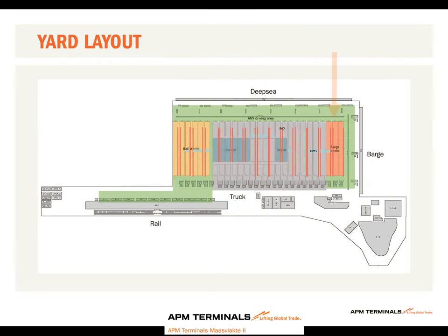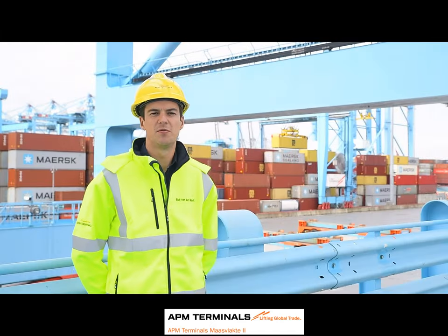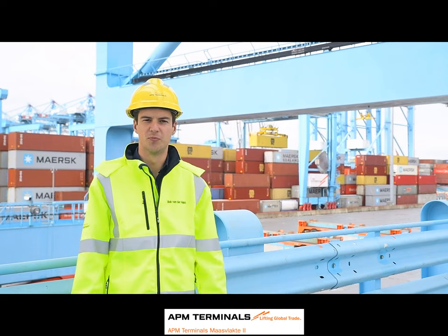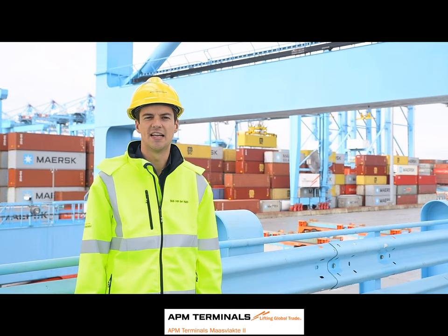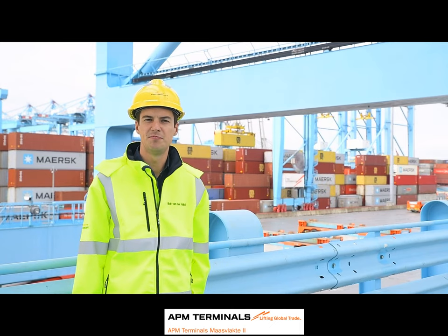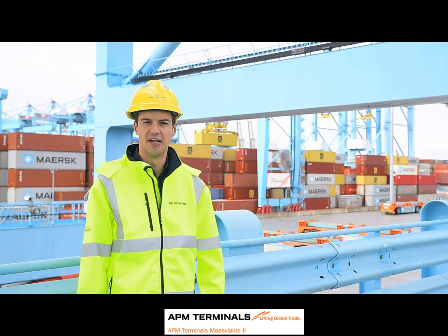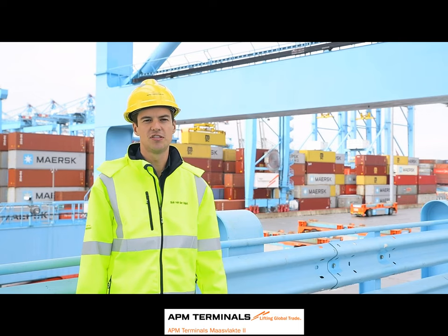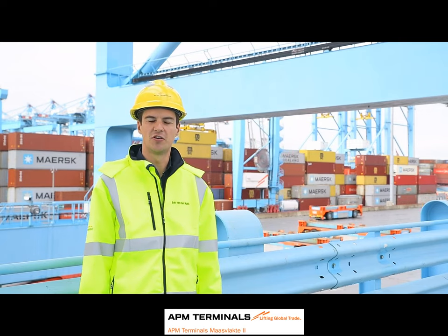The containers related to these moves all flow through the yard. There are 3 dedicated barge stacks, 6 rail stacks and 18 truck stacks. Within these stacks there are dedicated areas for reefers, IMOs and 45-foots. Within the stack we want to stack as many containers as possible while doing it as efficiently as possible, which means minimizing moving a container.